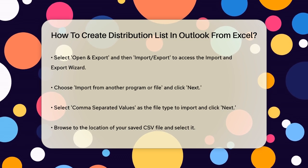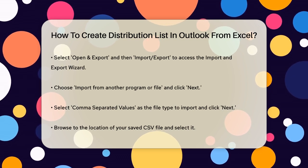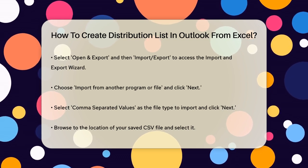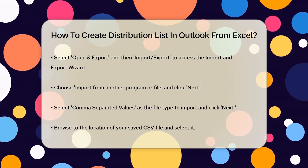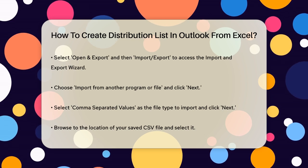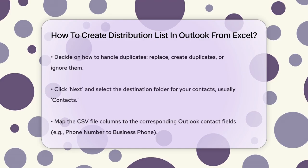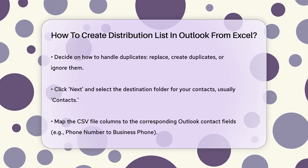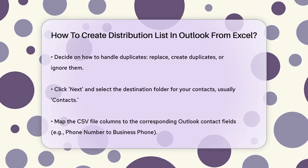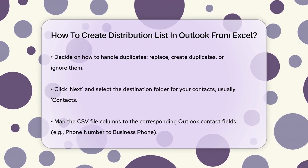Browse to the location where you saved your CSV file and select it. Under Options, decide how you want to handle duplicates. You can choose to replace existing contacts, create duplicate contacts, or not import duplicates at all.